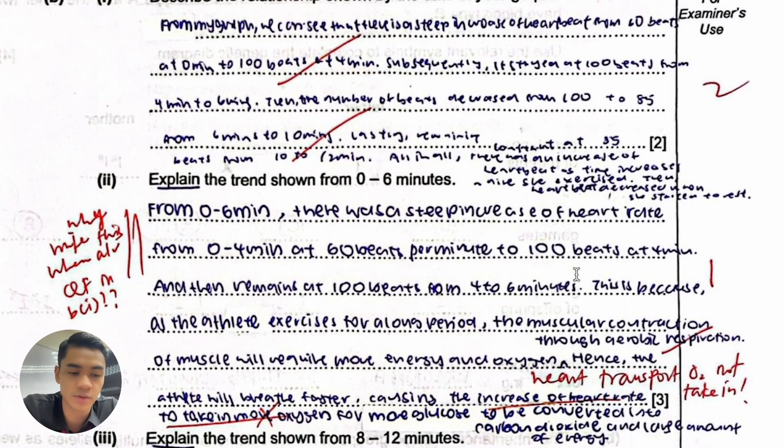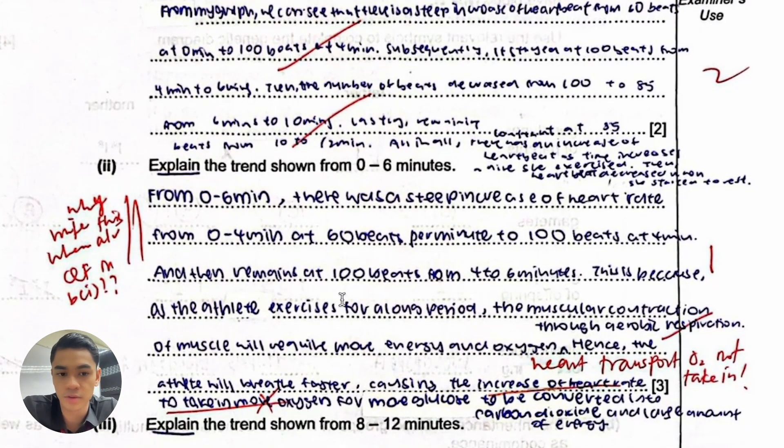I will also say so that we can remove metabolic waste products such as carbon dioxide from the body faster. That's why we need to increase heart rate, because it's producing more of this from the muscles. Faster heart rate allows us to transport it faster to the lungs where it can be removed. That would be my third mark.